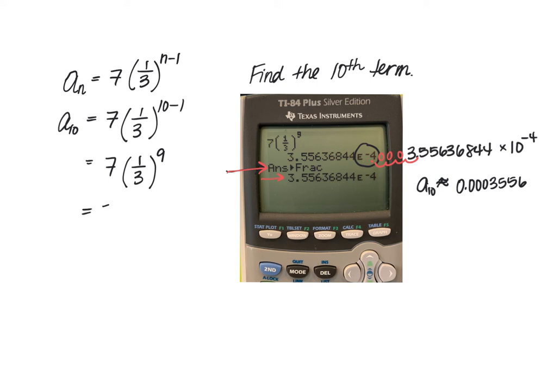So what I mean by that is when you're raising 1 third to the 9th power, that is essentially the same as raising the numerator to the 9th power and the denominator to the 9th power. So 1 to the 9th power is just 1. And then you can use your calculator to evaluate 3 to the 9th power, which will be 19,683.